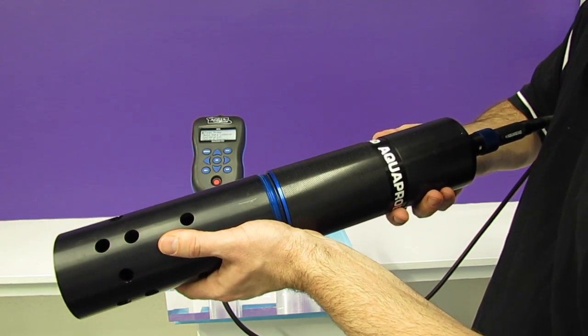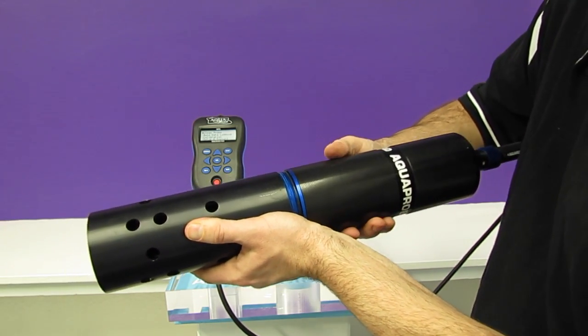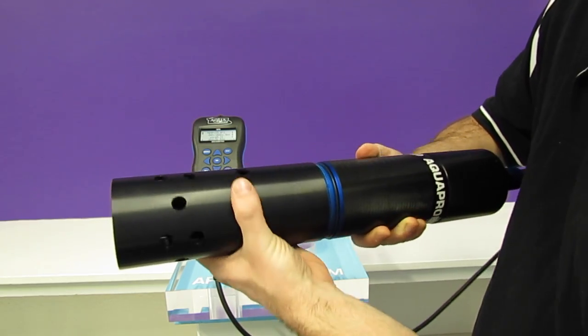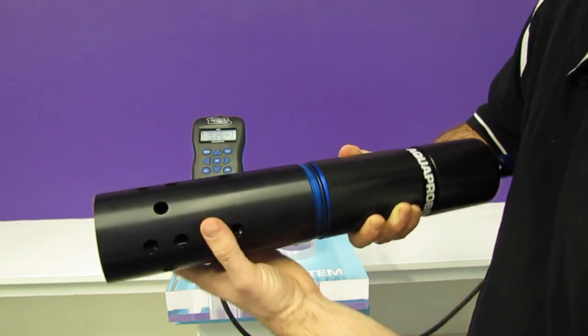This is the AP7000 AquaProbe from AquaRead. As you'll see, it's substantially larger than the AP2000 and AP5000 because it has the potential to hold more sensors and because of its central self-cleaning system.